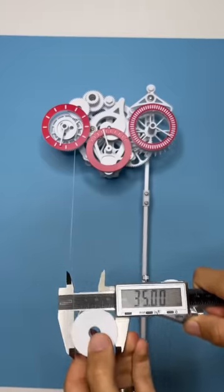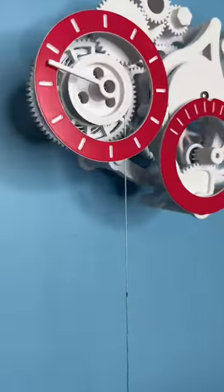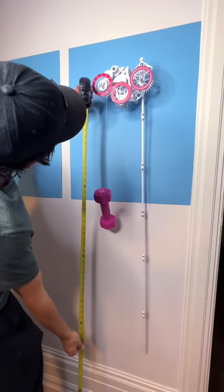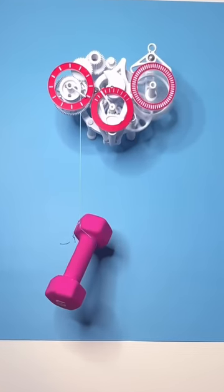So how long does this thing run for? Well, the spool is a 35mm diameter, which means it releases about 110mm of string per rotation. We have 1500mm of space for the weight to drop, so that means that this clock can run for over 6 days per winding. Crazy.